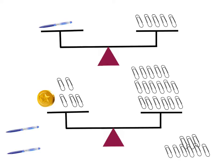Now we have things that we can take off of both sides of the pan balance. I have paperclips on this side and I have paperclips on this side. So I have a coin and five paperclips is equal to seventeen paperclips.